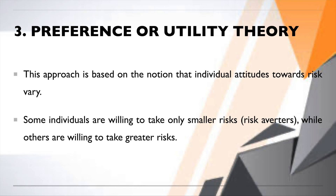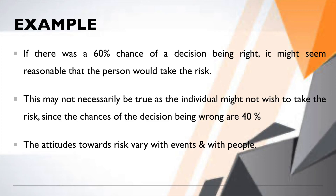Attitudes toward risk vary: some individuals are willing to take only small risks and want to avoid risk altogether. For example, if there is a 60% chance of a decision being right — say, investing in gold or a mutual fund — some people would say there is a good chance of profit and go ahead and invest.